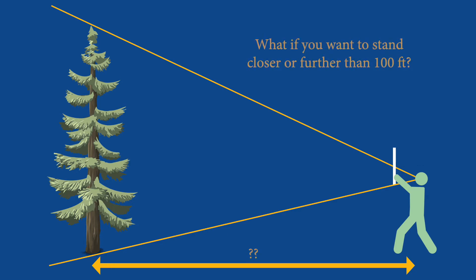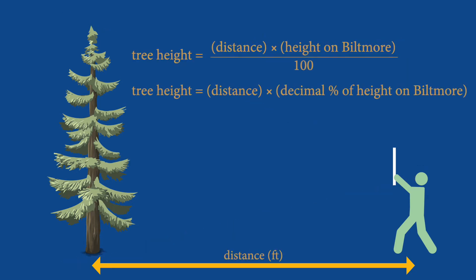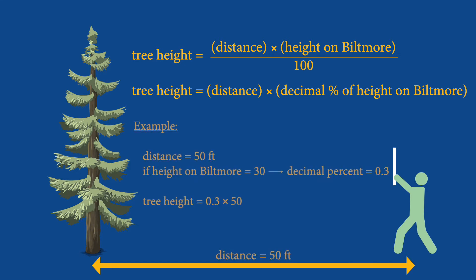However, it may be necessary to measure tree height from less than 100 feet. For example, if you stood 50 feet from the tree and the scale read 30, then the tree would be 30% of 50 feet, or 15 feet tall.